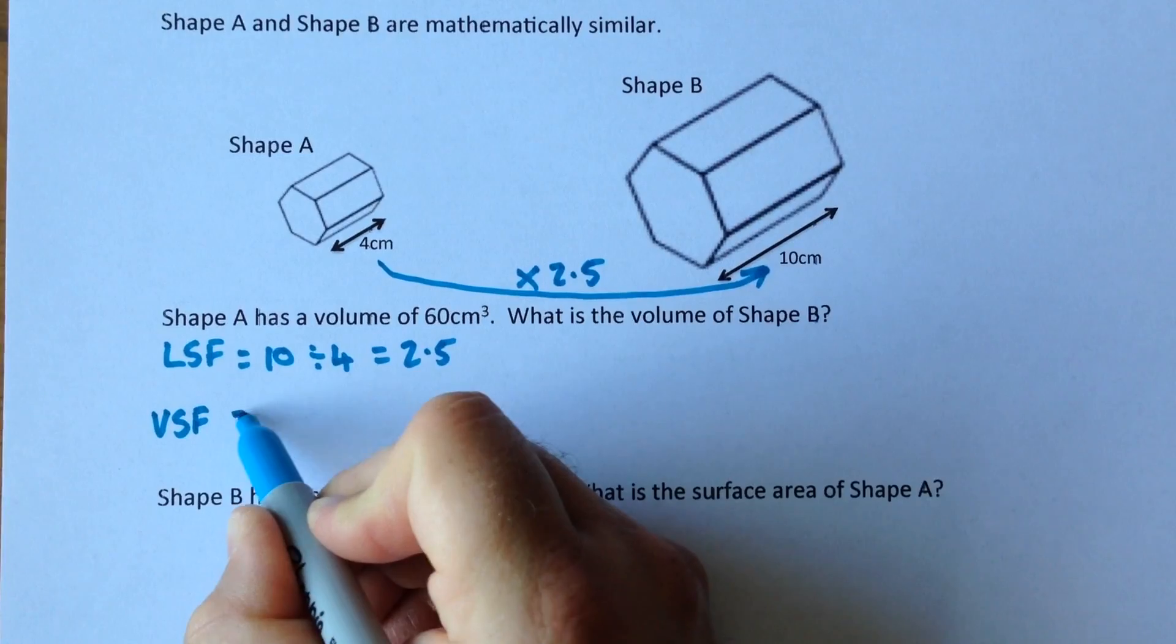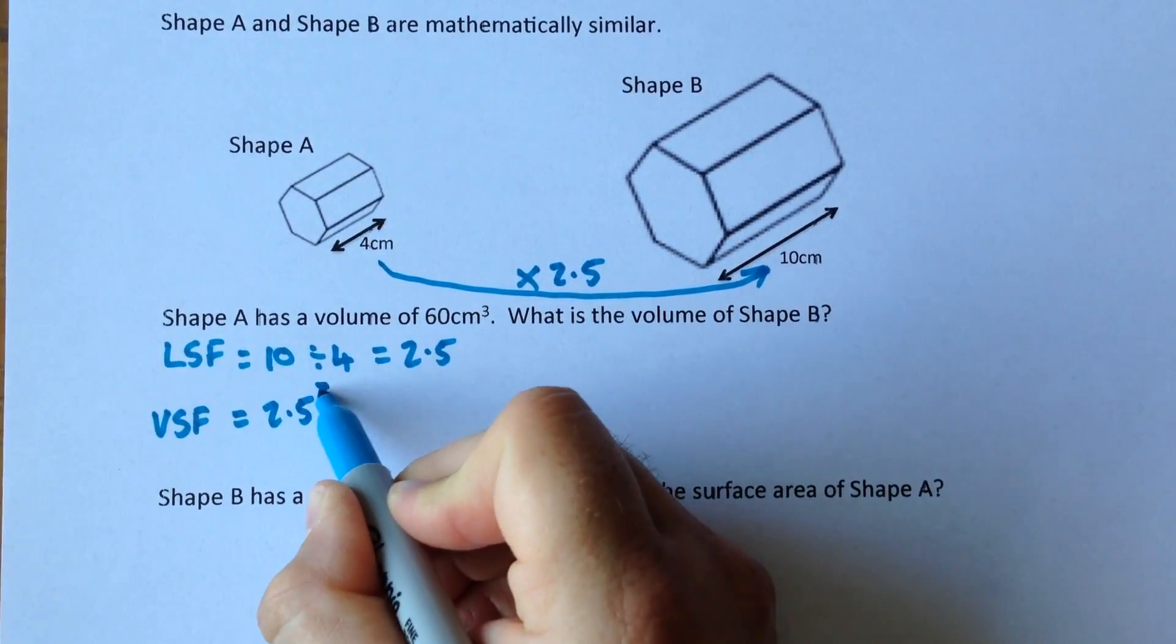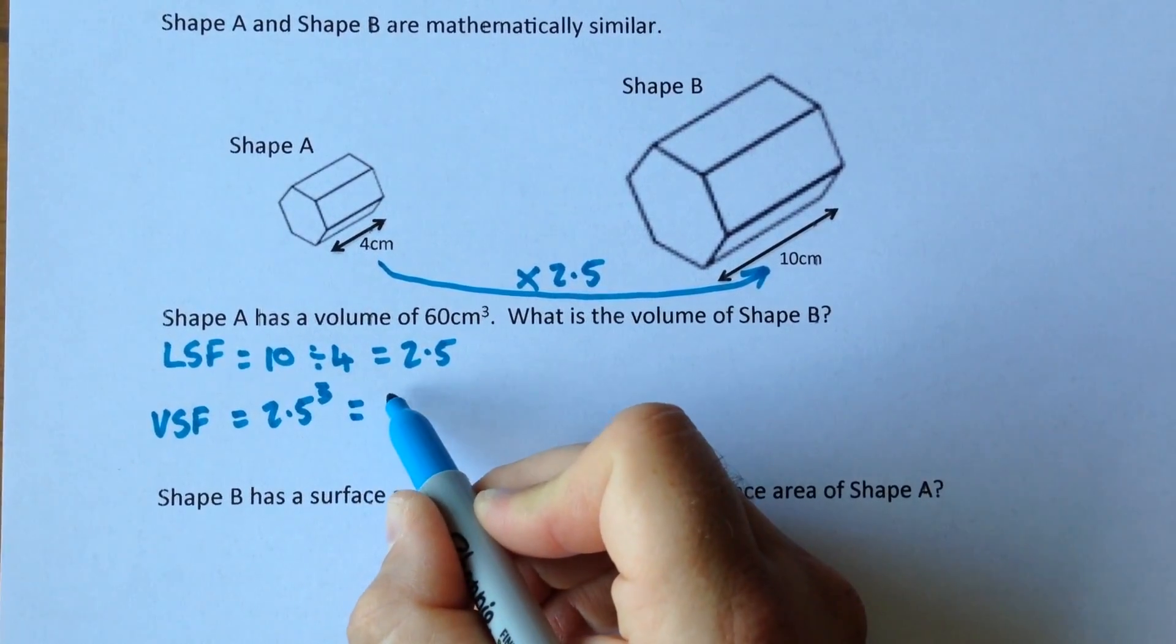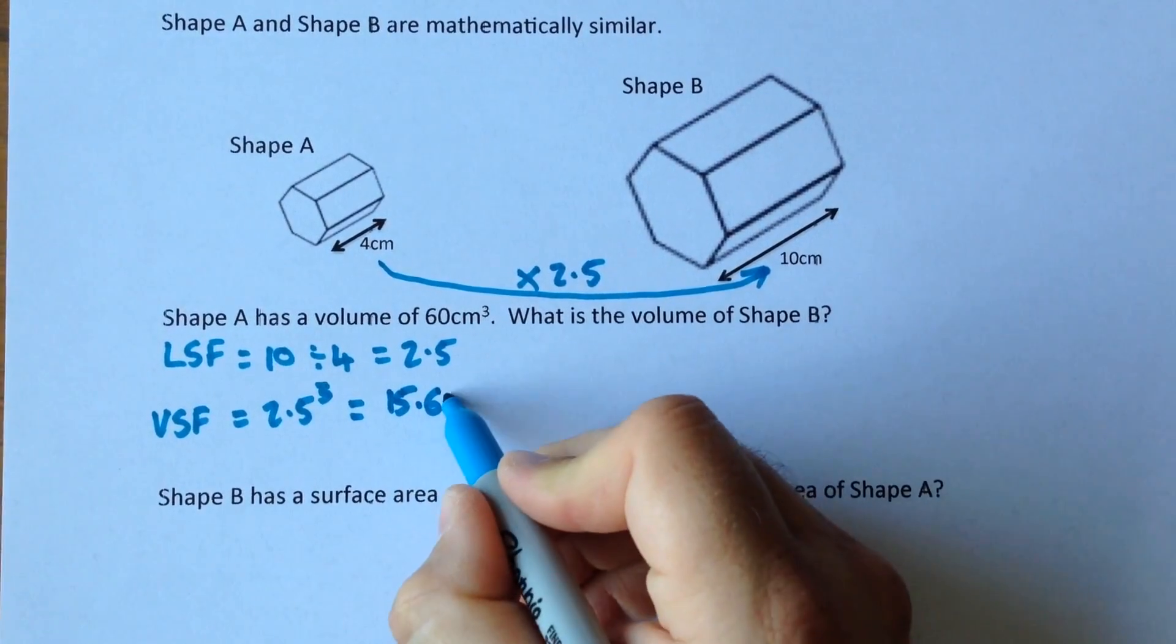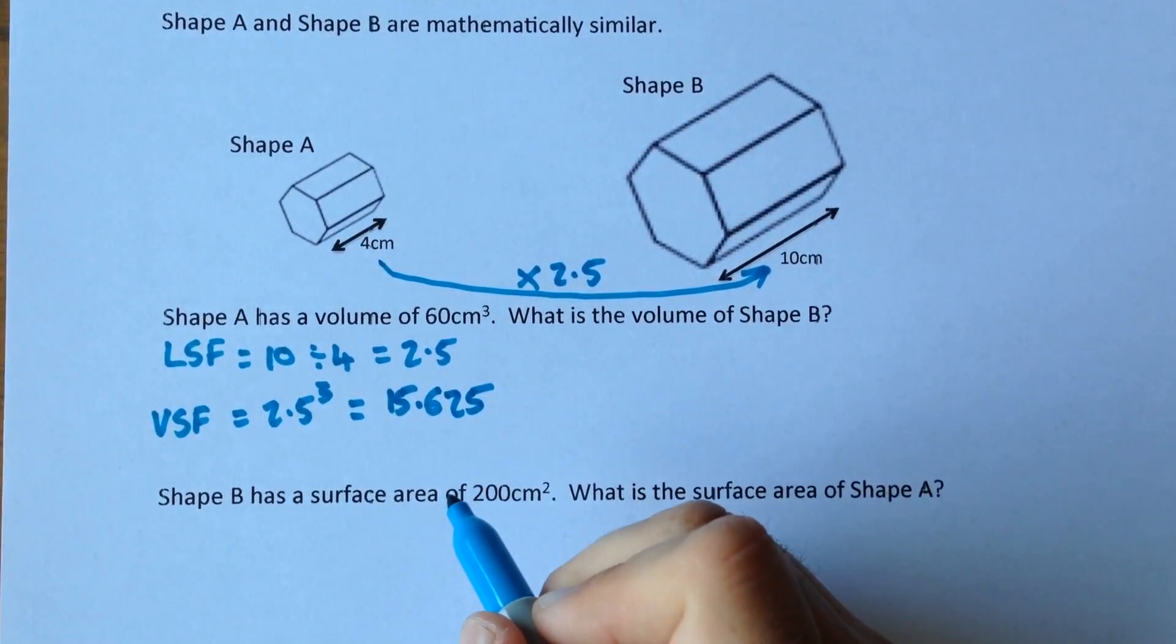Now we're interested in volume so we need the volume scale factor which we can get by cubing the length scale factor, which gives us a volume scale factor of 15.625.